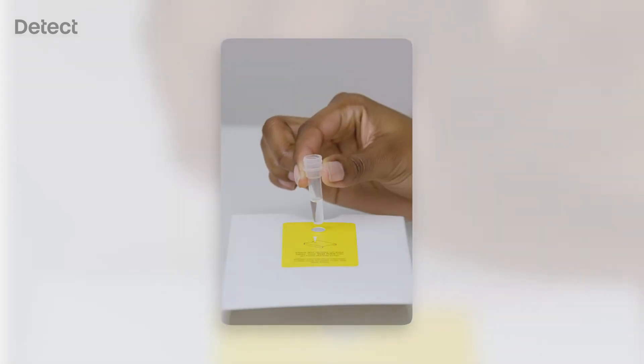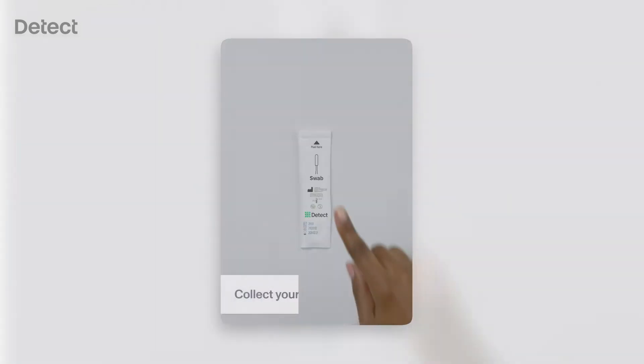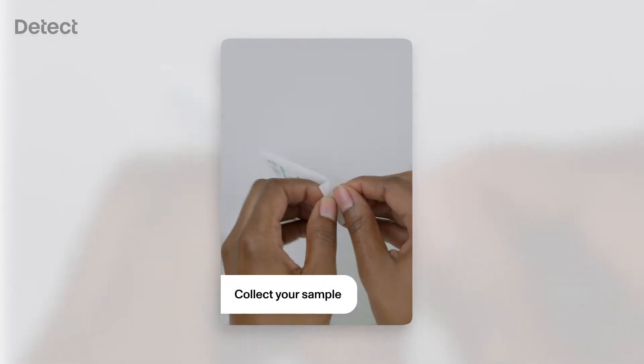Carefully open the test tube and place it in the cardboard divider. Open the swab without touching the soft tip.